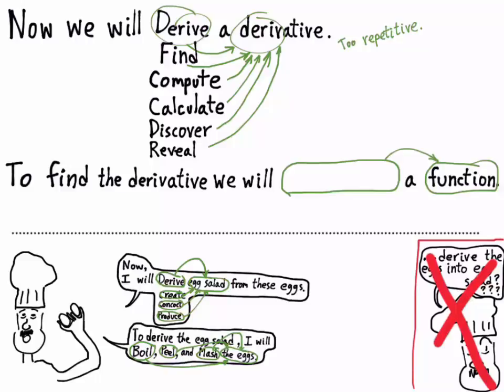If you want to say 'to find the derivative, we will _____ a function,' the verb that goes in that blank is 'differentiate.' You do not derive a function into its derivative. You differentiate a function to derive the derivative.